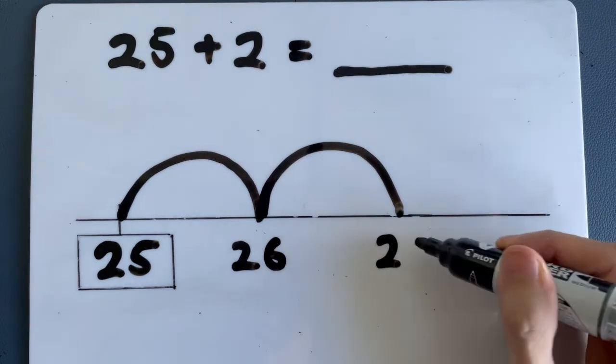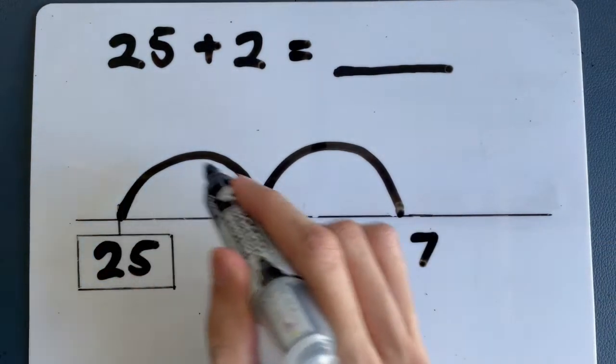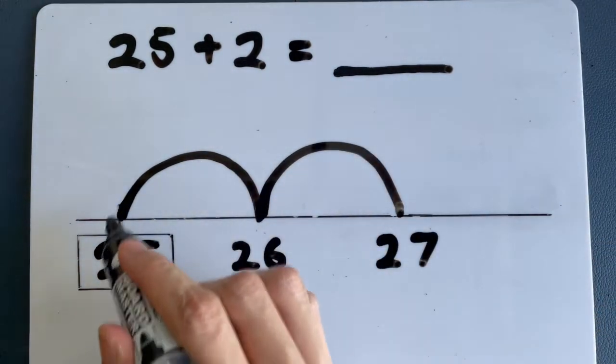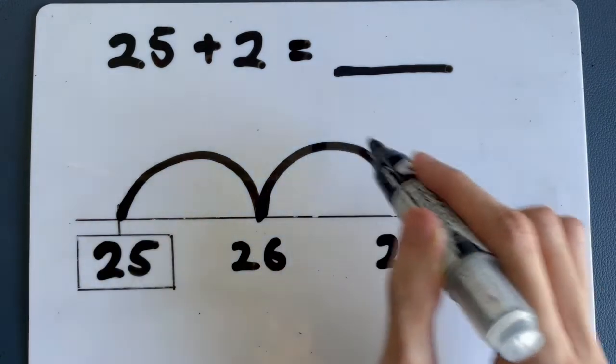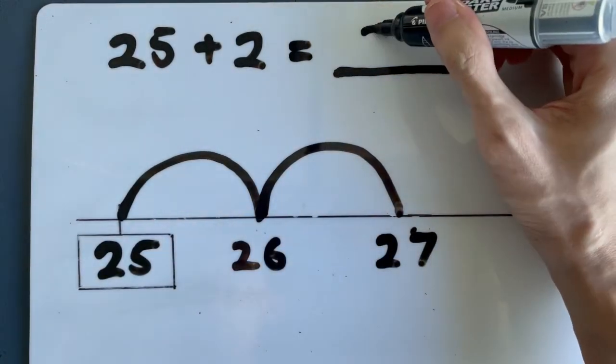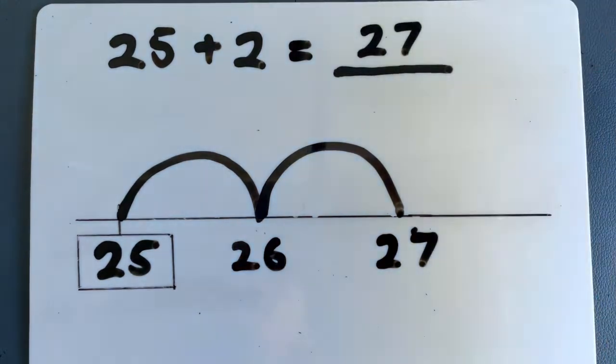So what do you get? 27. So one jump, two jumps. 25, 26, 27. So the answer using this technique is 27.